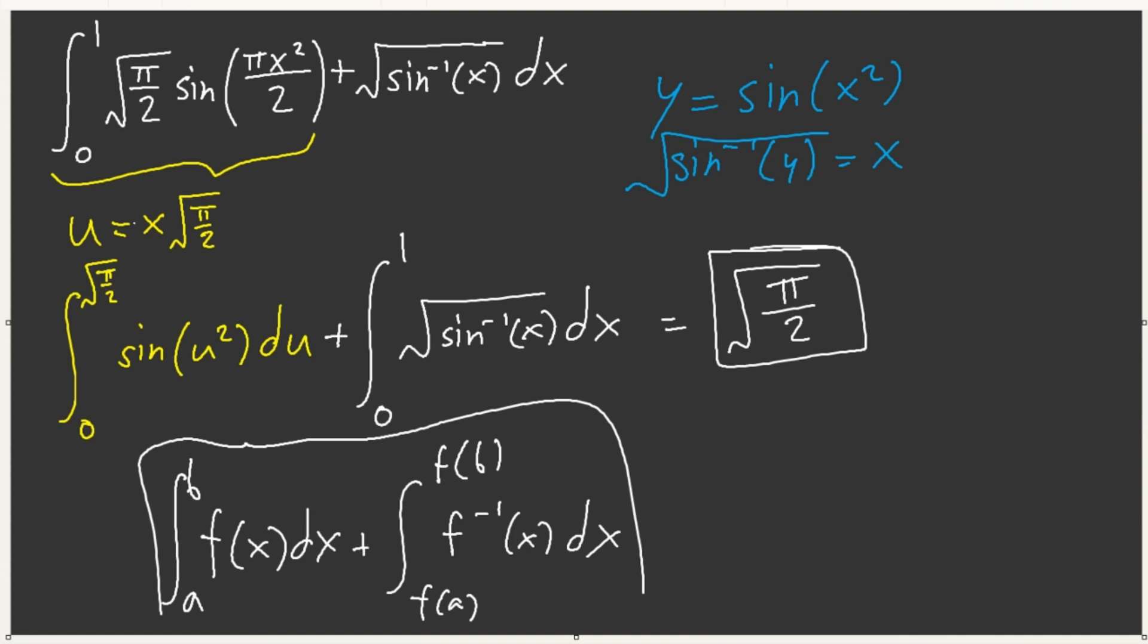So pretty much all we have to check, all we have to do is do a little bit of modification. So we're formatting it in terms of sum of inverses, and then check the function, make sure they are inverses, and check the bounds to make sure they are corresponding to each other. Let's do another one.